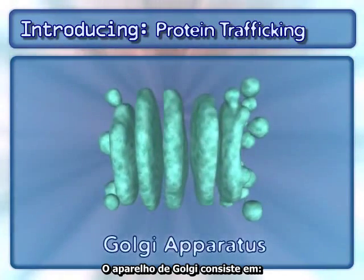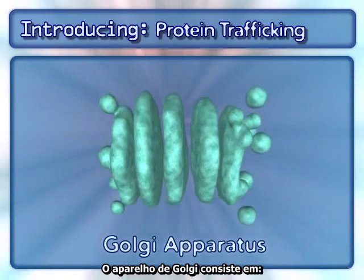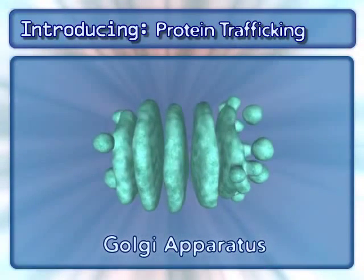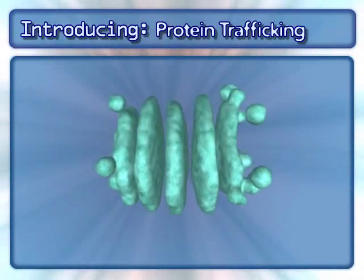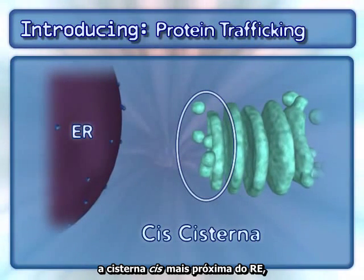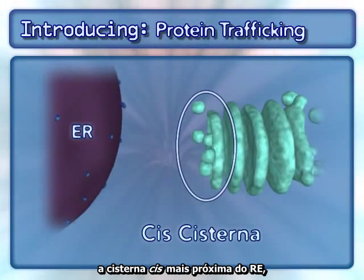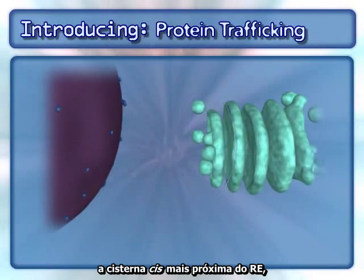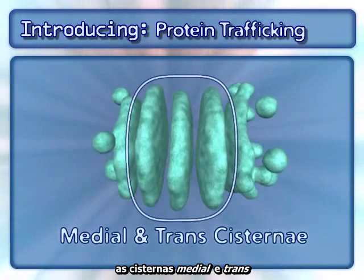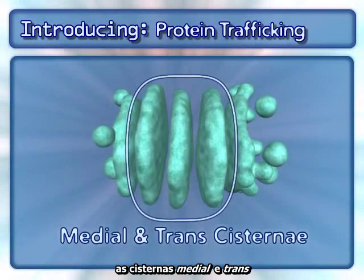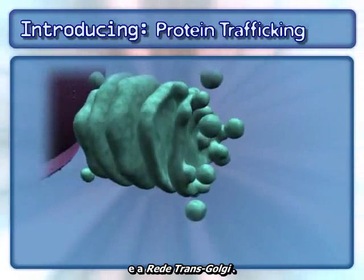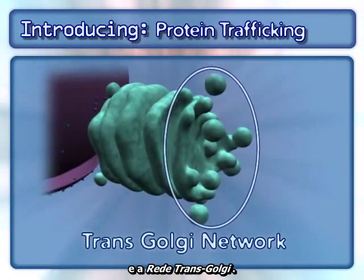The Golgi apparatus consists of general components: the cis-cisterna nearest the endoplasmic reticulum, or ER, the medial and trans-cisternae, and the trans-Golgi network.